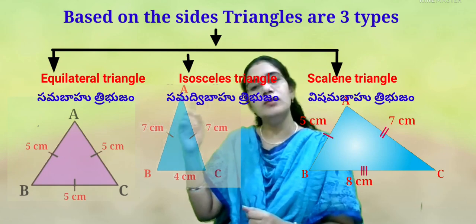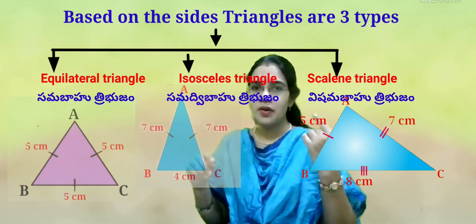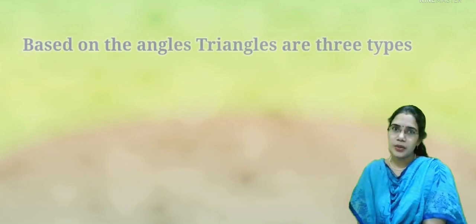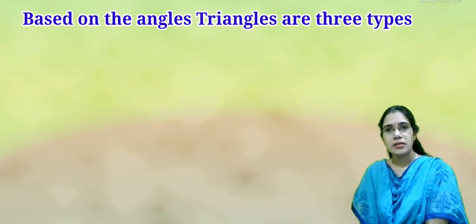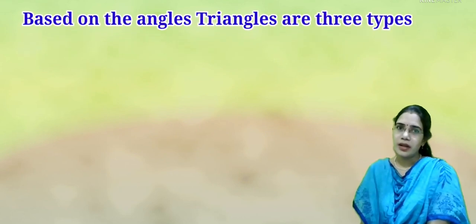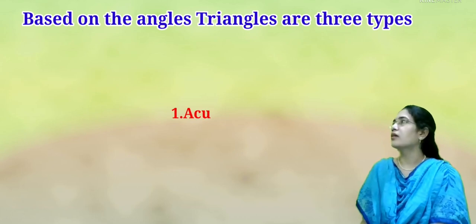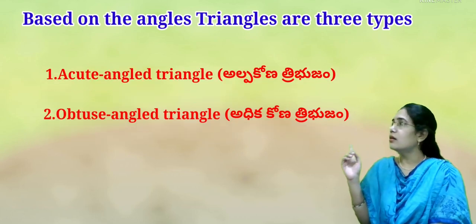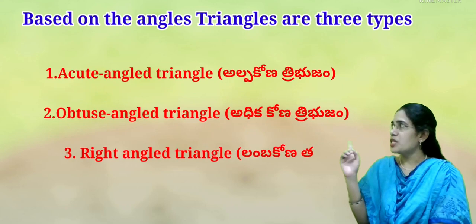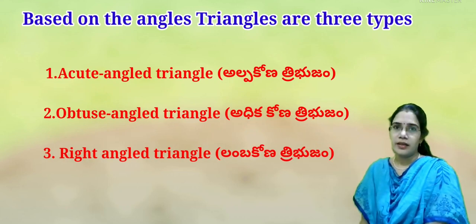So, based on the sides, triangles are three types: Samabahu Thribujamu (equilateral), Samadvi Bahu Thribujamu (isosceles), and Vishama Bahu Thribujamu (scalene). Now coming to the angles — based on the angles also, triangles are three types: acute angle triangle, obtuse angle triangle, and right angle triangle.